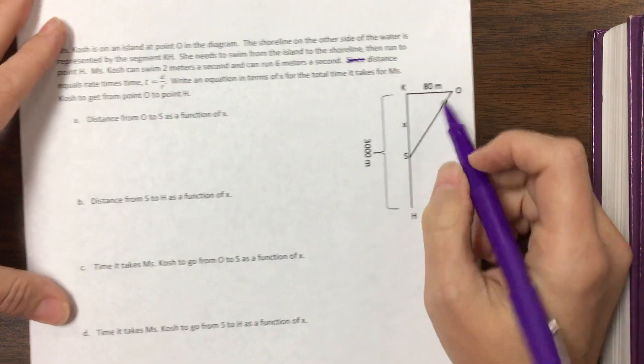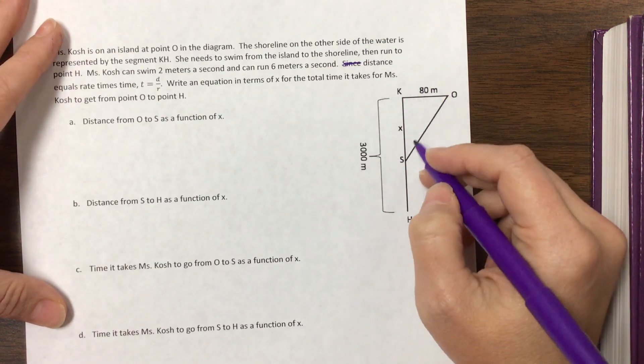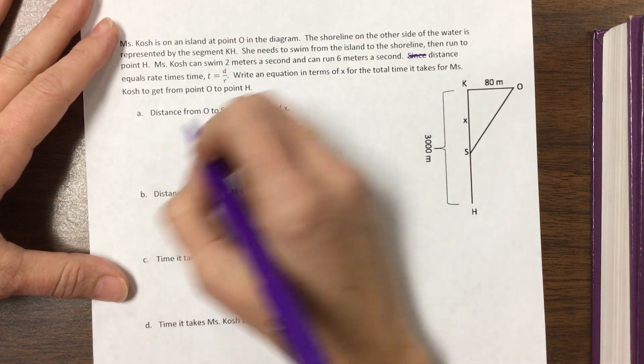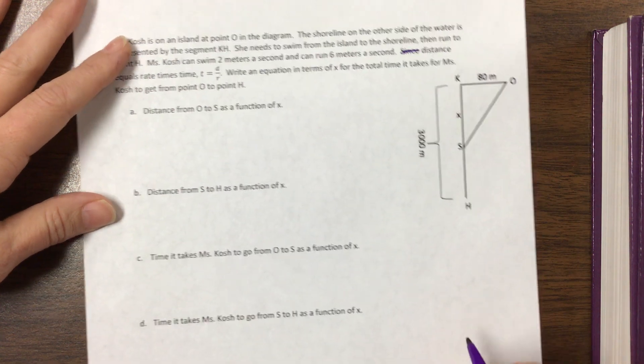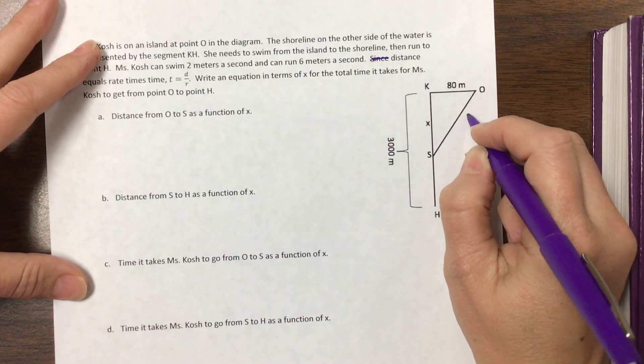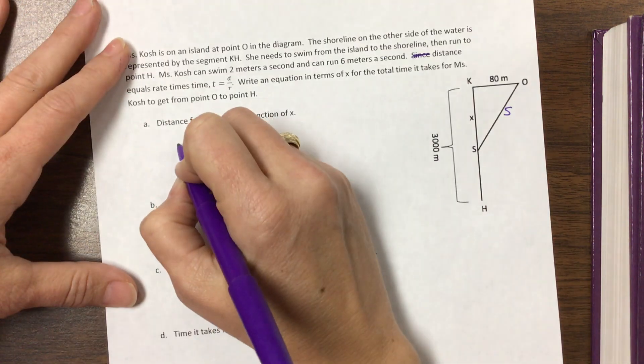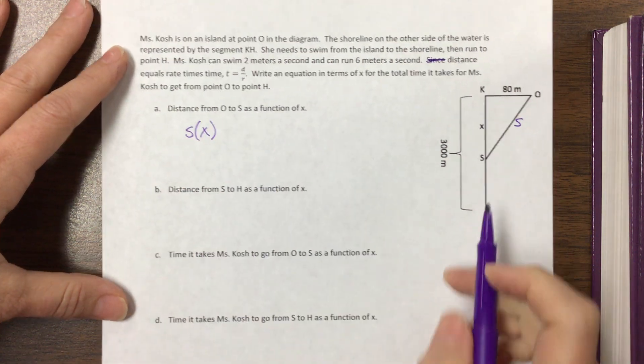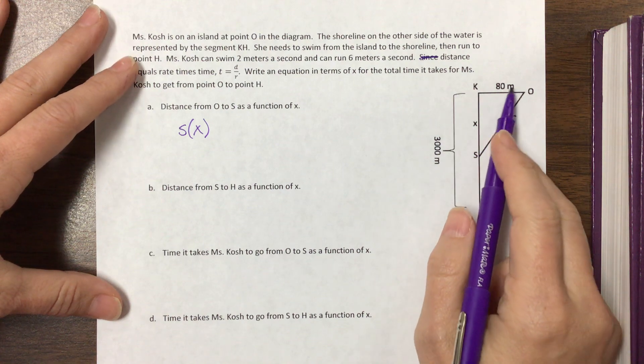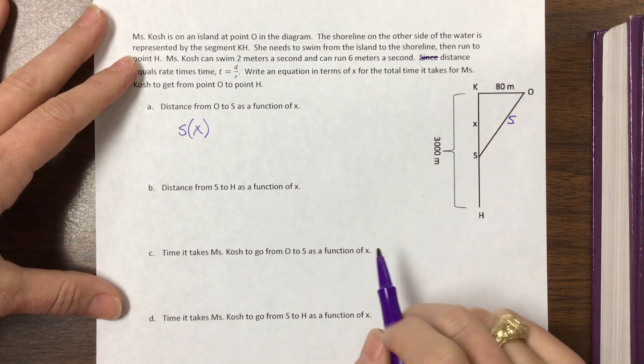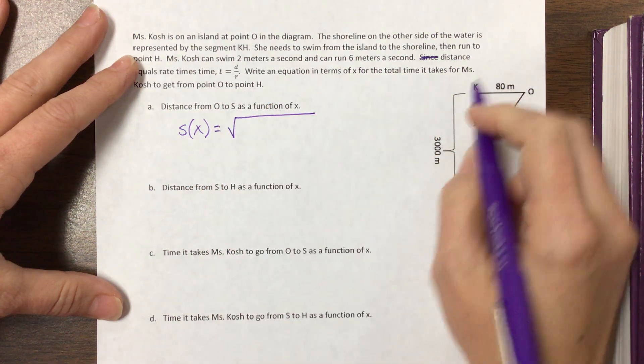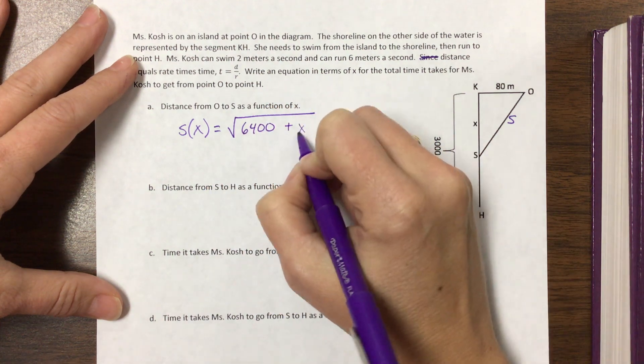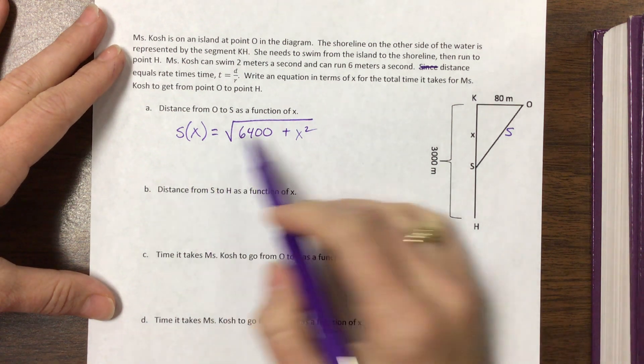So if this distance here is X we know that we can use Pythagorean theorem to find this distance here. So they say distance from O to S as a function of X. Let's call this S because that's what I'm swimming. So S of X, and I do expect you to use function notation, would be equal to, well this is Pythagorean theorem. So 80 squared plus X squared would equal S squared. So S itself is going to equal the square root. What is 80 squared? 6,400 plus X squared.